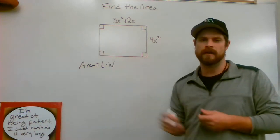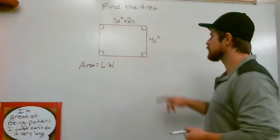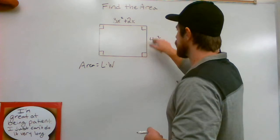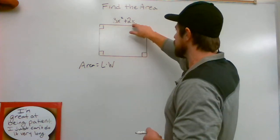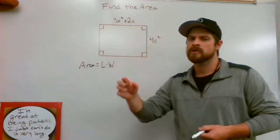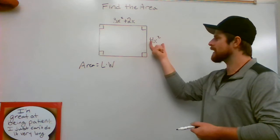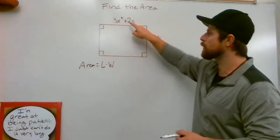I'm going to take this 4x squared, I'm going to multiply it by all of this, which is two terms. So if I'm taking something that's single by itself and multiplying it by two parts, I've got to use the, it's a property.